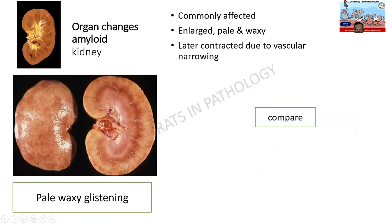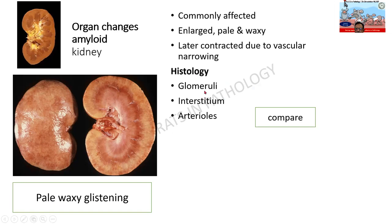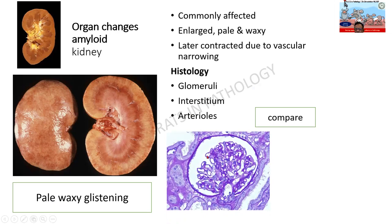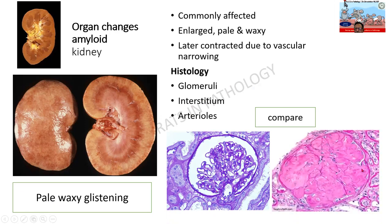Another affected organ is the kidney. Compared to normal, the kidney in amyloidosis is slightly enlarged in early stages and later decreased due to fibrosis. Importantly, it is pale, waxy, and glistening. Normal kidney histology requires assessment of glomerulus, interstitium, and blood vessels. In amyloidosis, the entire glomerulus is replaced by homogeneous eosinophilic material, confirmed as amyloid by special stains.